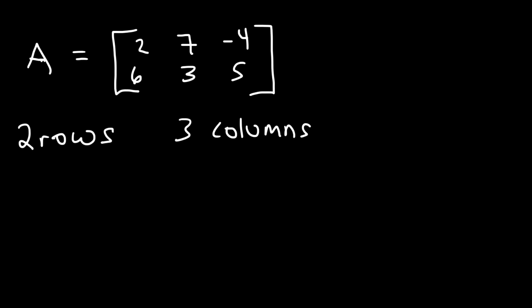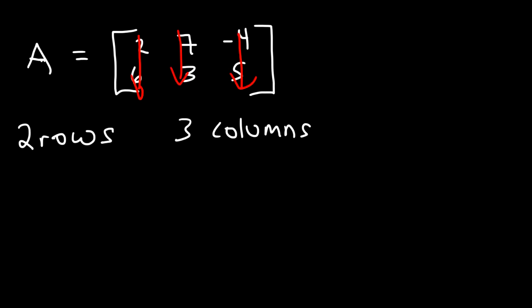The rows are horizontal — this is the first row and this is the second row. The columns are vertical — first column, second, third. So with two rows and three columns, this is considered a 2 by 3 matrix. The order of the matrix lists the rows first and then the number of columns.